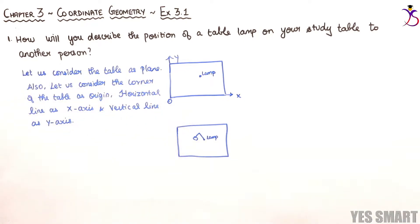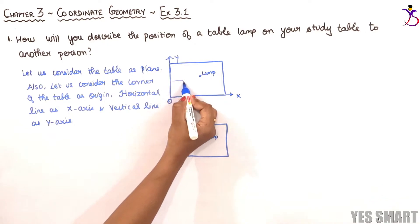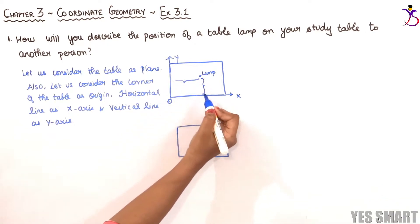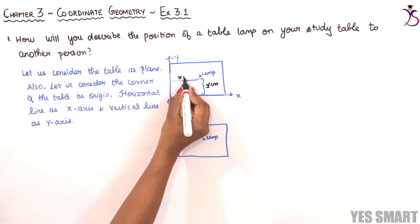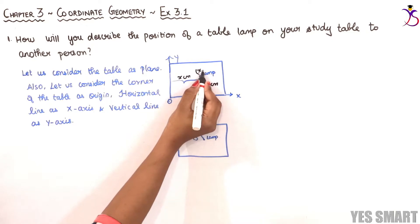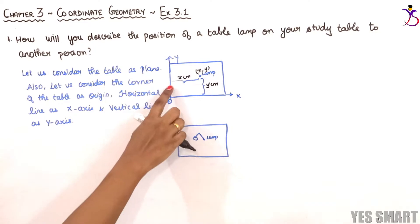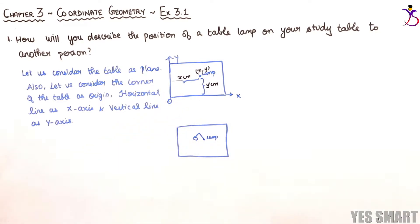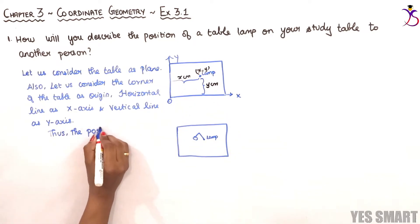Now, in order to know the exact position of this lamp, we need to know two distances. This distance refers to the y-axis, so let it be y centimeters, and this distance refers to the x-axis, so let it be x centimeters. The position of this lamp can be given by (x, y), where x is the distance from the origin along the x-axis and y is the distance from the origin along the y-axis.